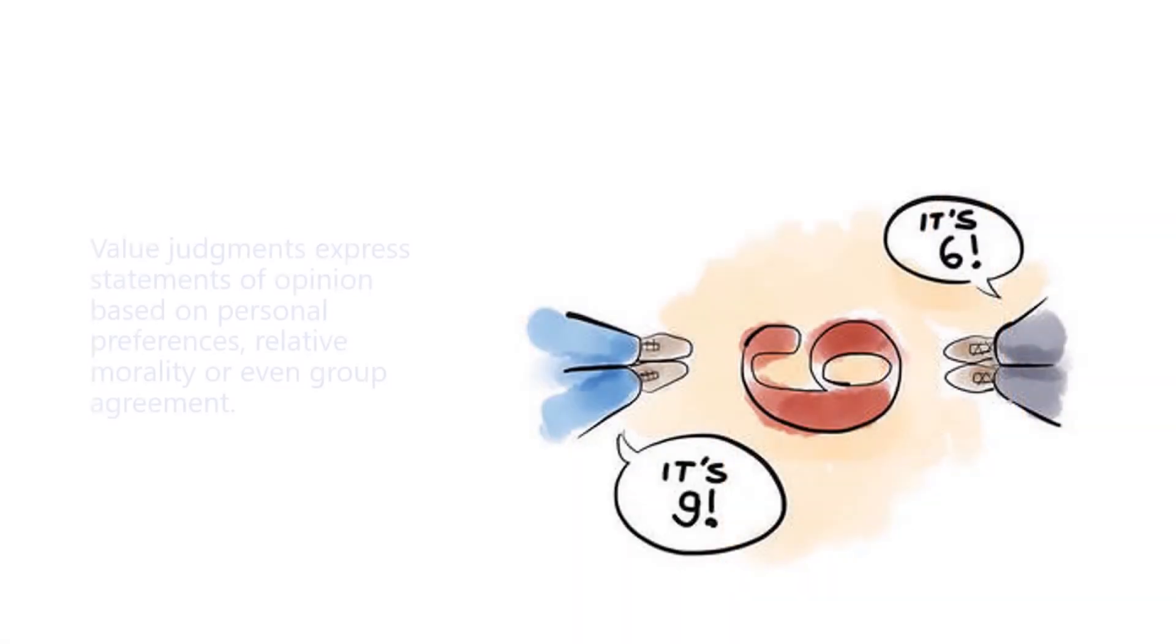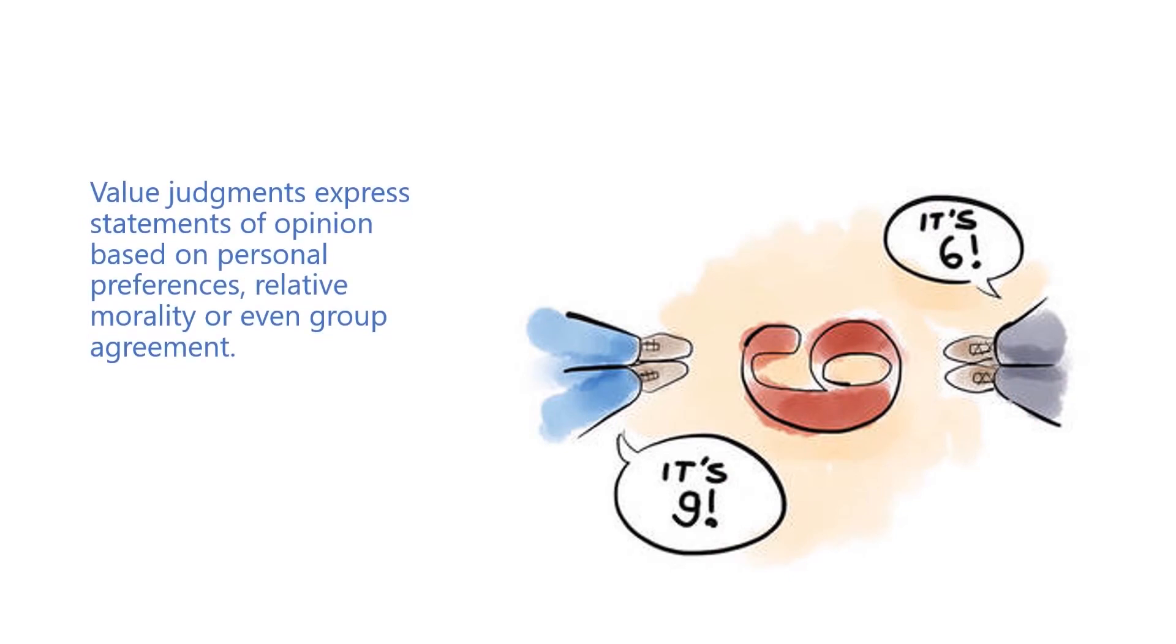Value judgments express statements of opinion based on personal preferences, relative morality, or even group agreement. The objective observer must strive at self-elimination in his judgments and provide an argument which is as true for each individual mind as his own.